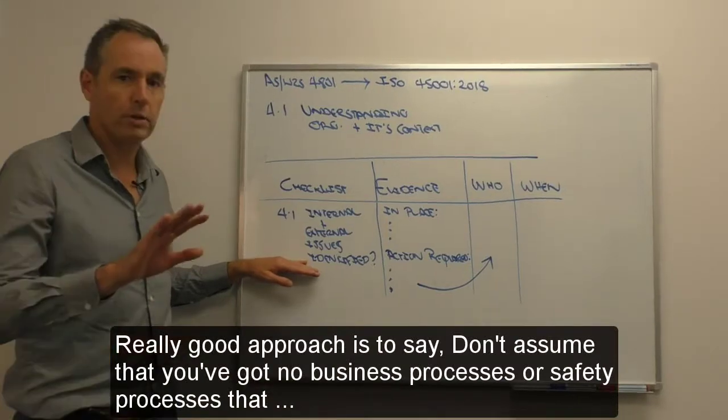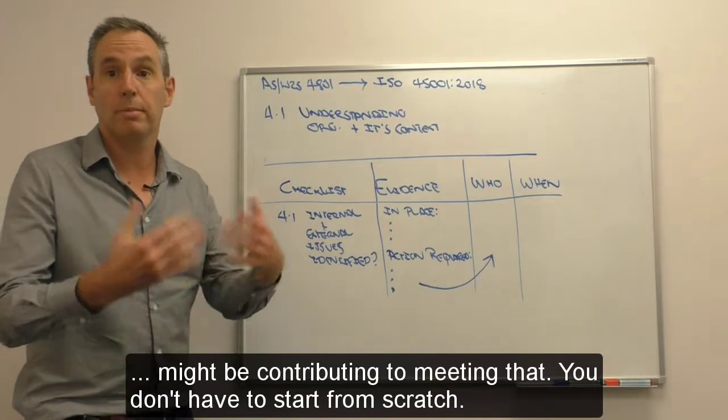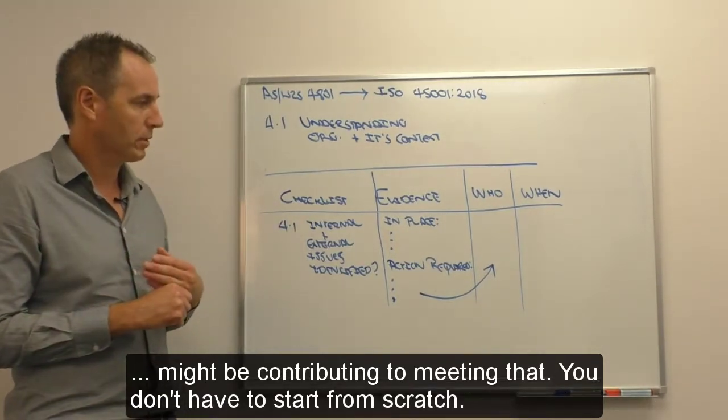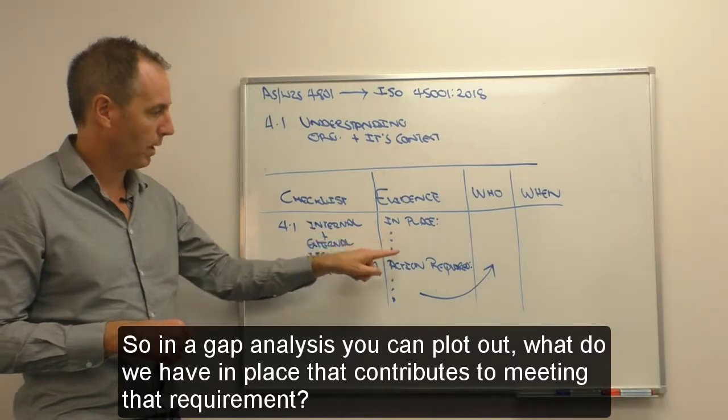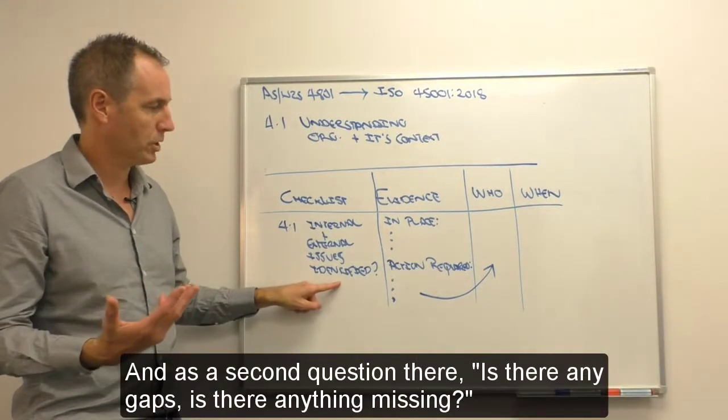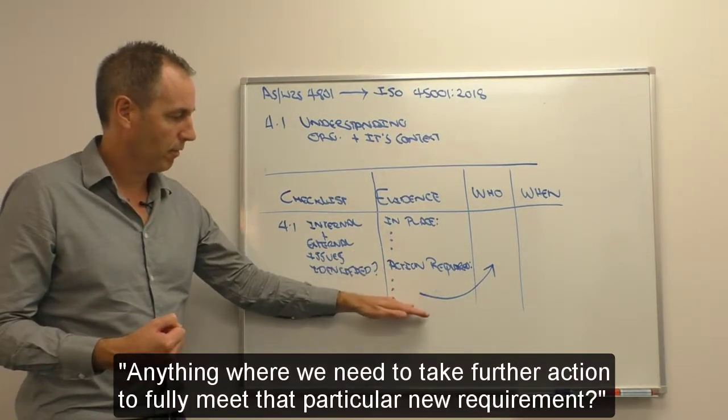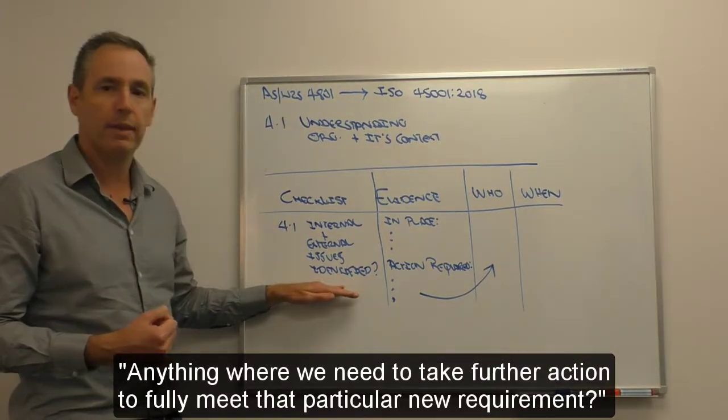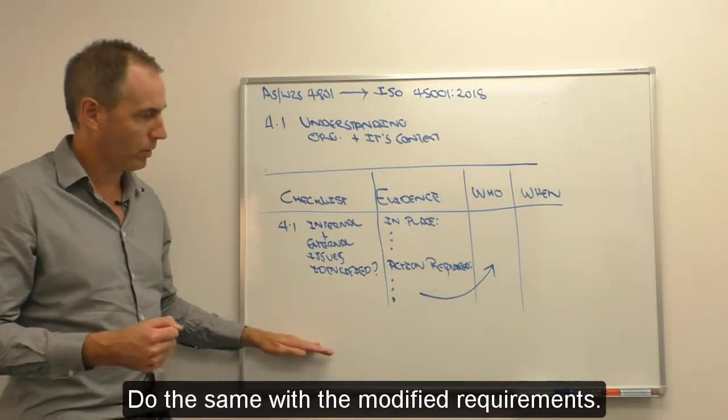A really good approach is to say, don't assume that you've got no business processes or safety processes that might be contributing to meeting that. You don't have to start from scratch. So in a gap analysis, you can plot out what we have in place that contributes to meeting that requirement. And as a second question, is there any gaps? Is there anything missing? Anything where we need to take further action to fully meet that particular new requirement? Do the same with the modified requirements.